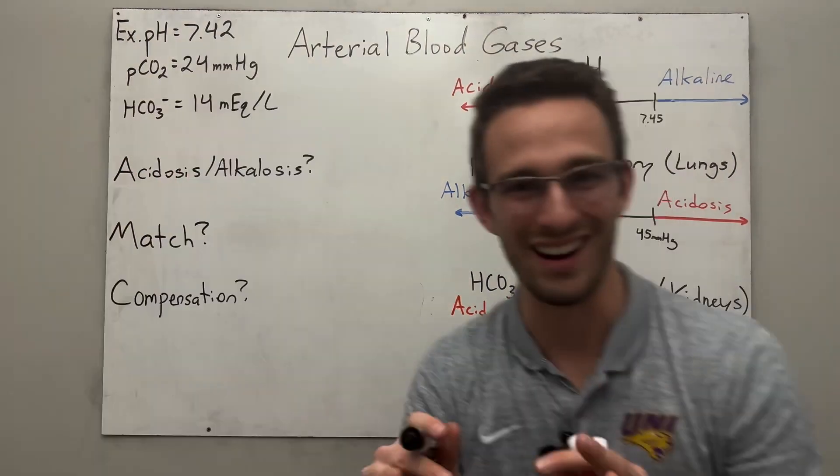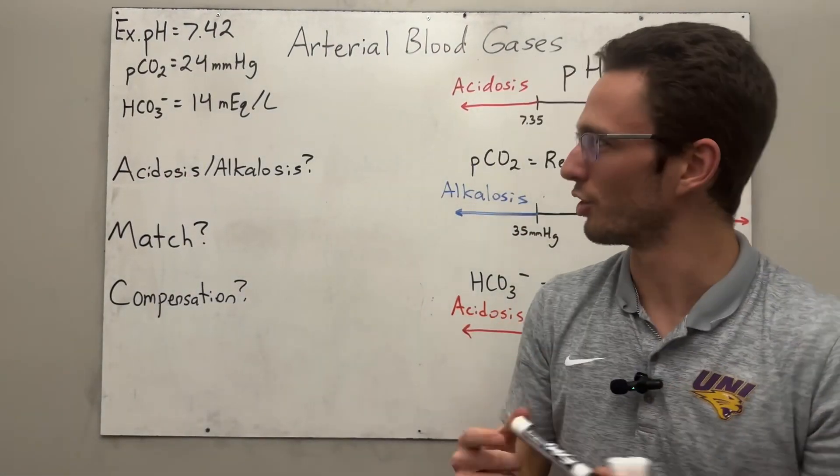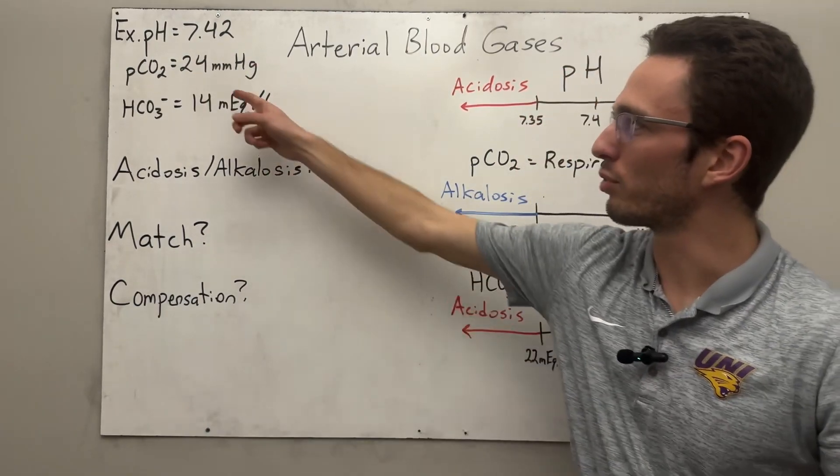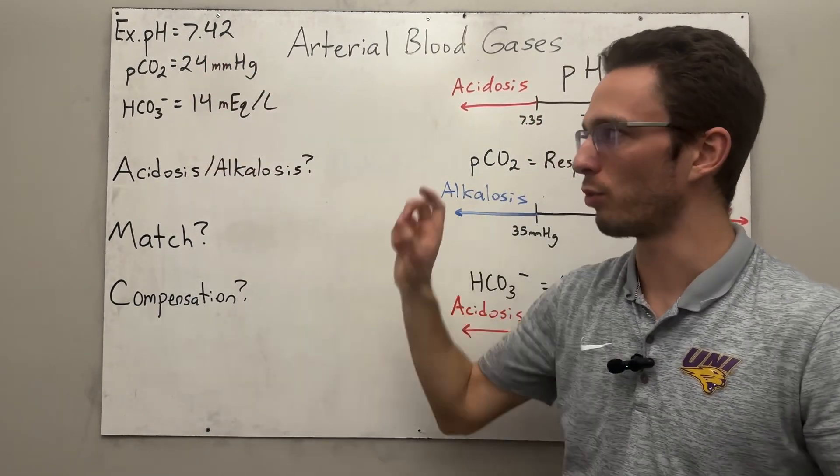So let's try another example next. All right, next up, I've cracked out a tough one for you. So pH 7.42, partial pressure carbon dioxide 24, bicarb 14.